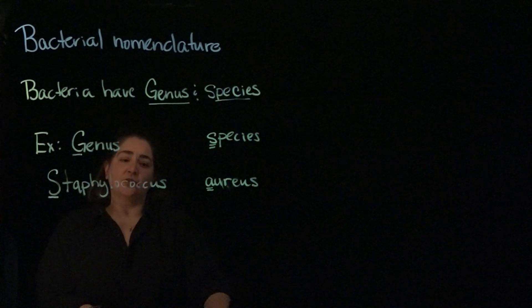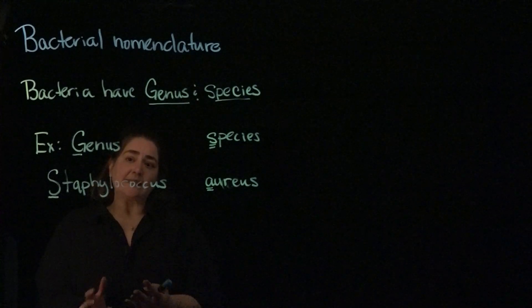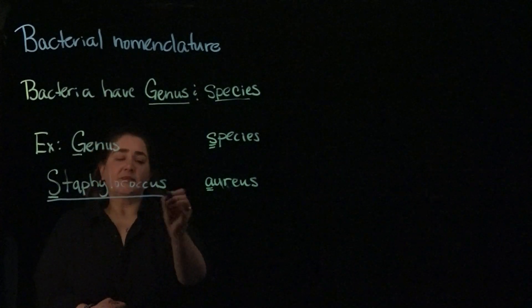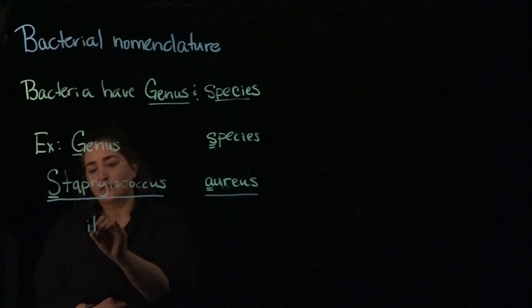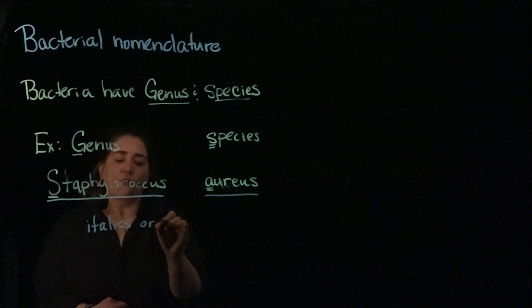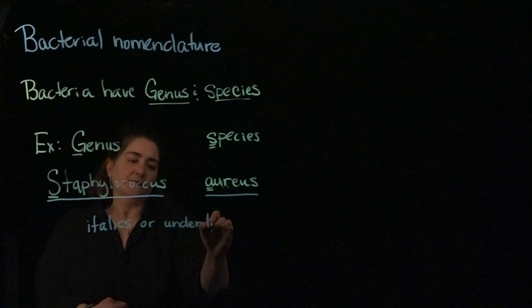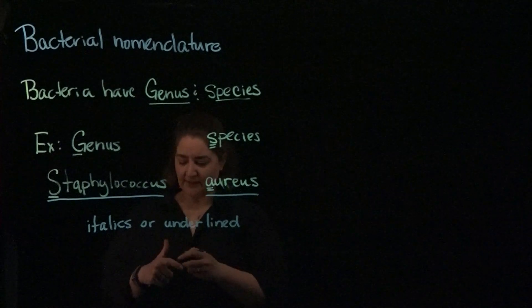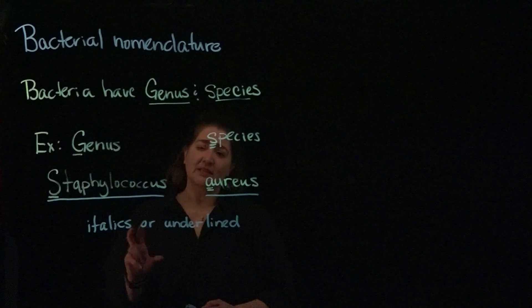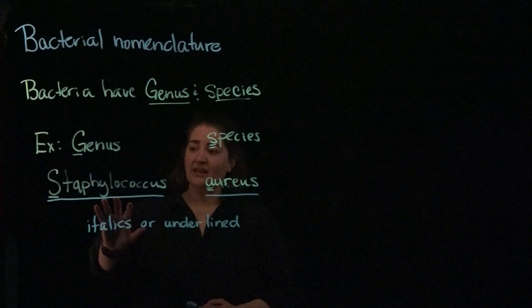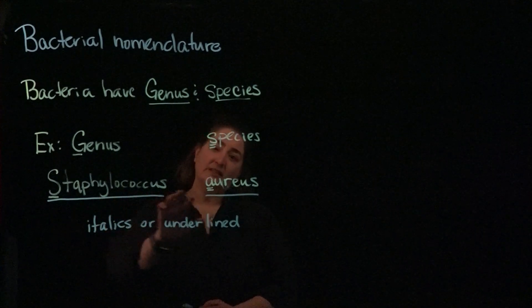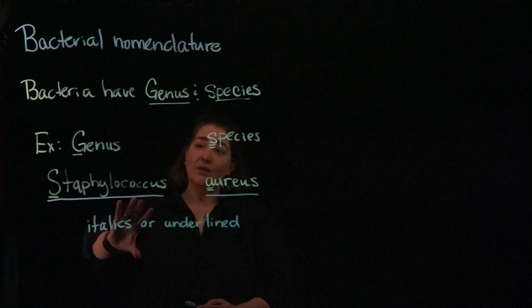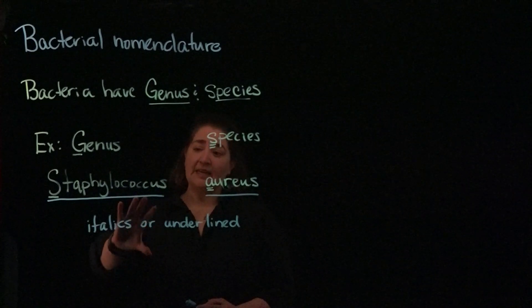The other important thing when expressing the name of an organism as its genus and species is that it either needs to be italicized or underlined. Because I can't really write in italics — I can write in cursive, but cursive isn't the same thing as italics — I'm going to underline all of the bacterial names I'll discuss during the semester. That's the way we properly present a bacterial name.